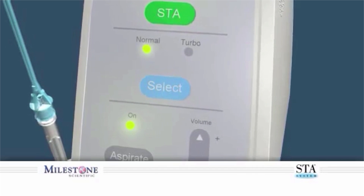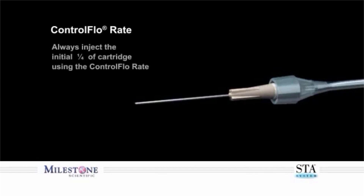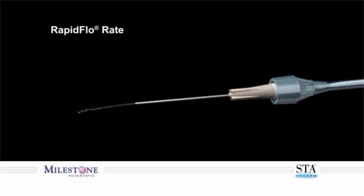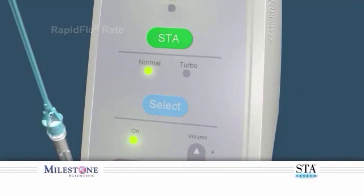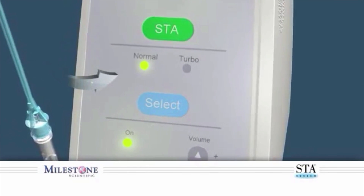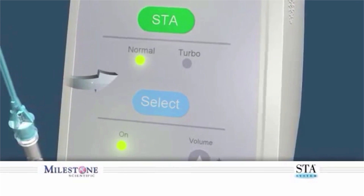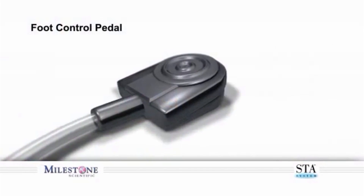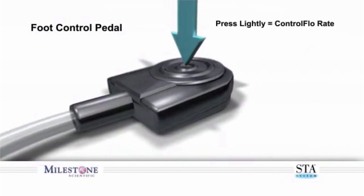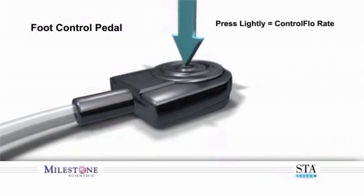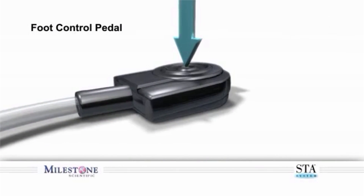Utilize the controlled flow rate to administer a minimum of one-quarter of the cartridge for the initial phase of the block injection. Once the patient feels the onset of soft tissue anesthesia, transition to the rapid flow rate. In the normal mode, the foot control has two distinct positions: depressing lightly enters the controlled flow rate; fully depressing enters the rapid flow rate.